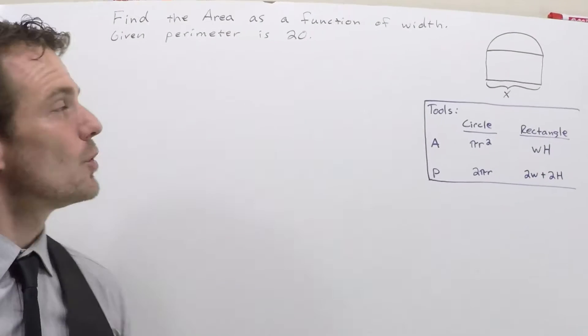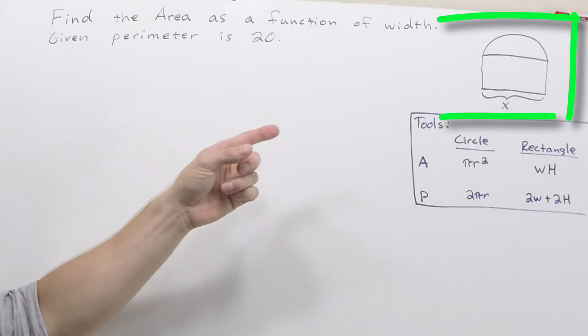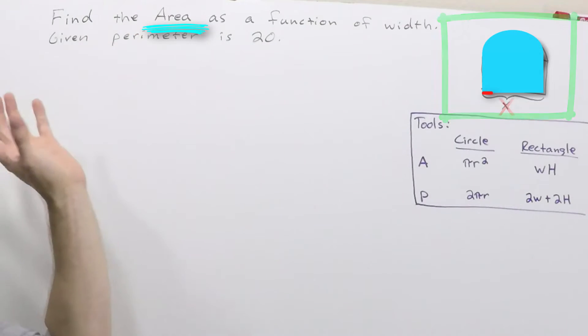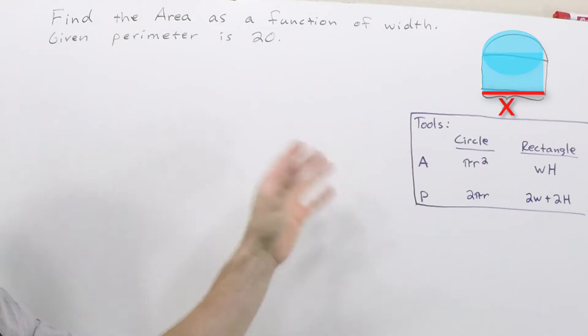Hi, the Math Informant here. We're trying to work this problem with a Norman window, writing the area as a function of only its width x. Here's how it goes.